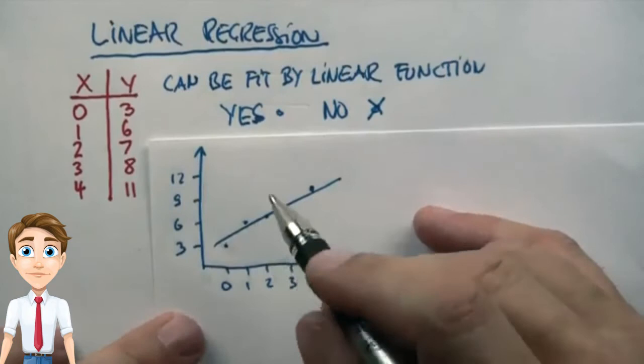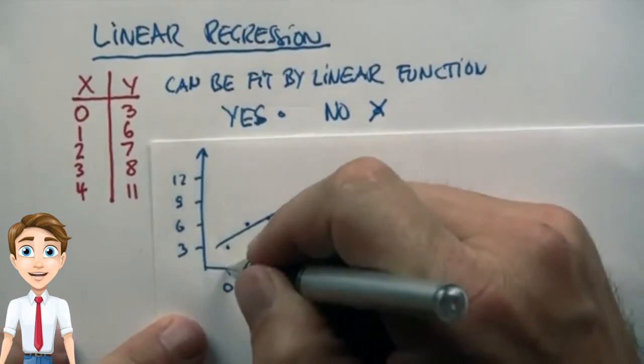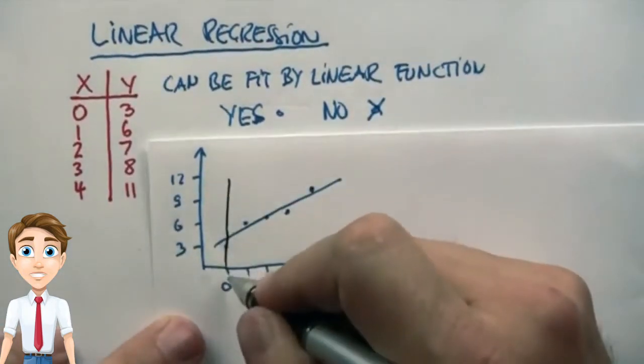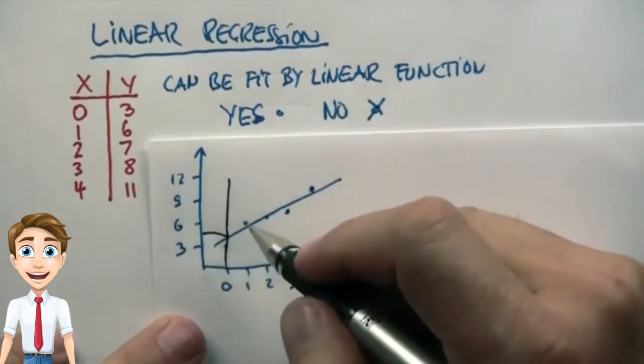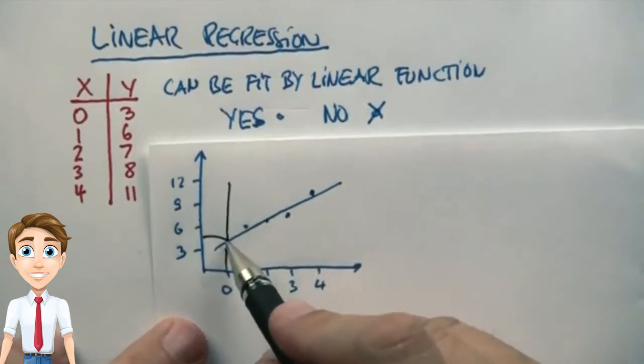And again, here are the data points with the solution. So if you take the axis where x equals 0, the y value is actually 3.4, and the slope is 1.8.